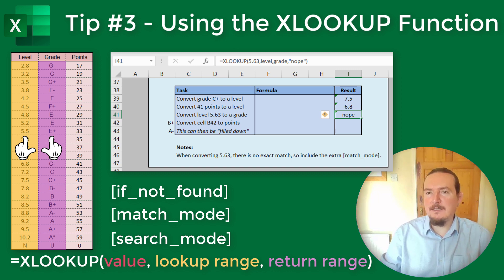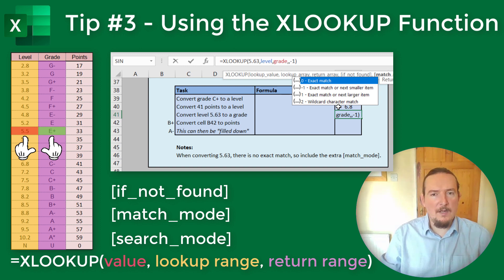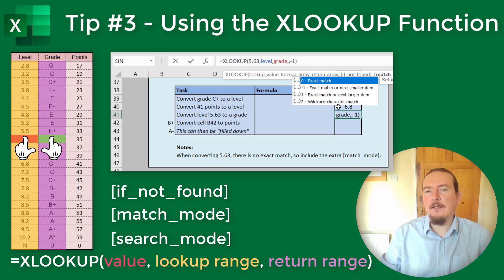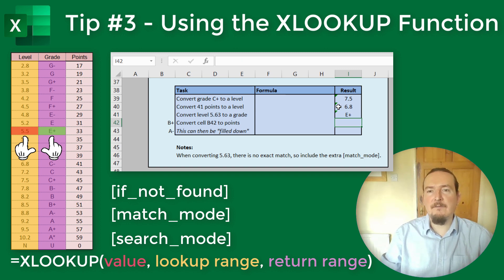The next input is match mode, and this behaves in the same way as the true/false input does in the VLOOKUP function. It defaults to 0, so if you miss it out, XLOOKUP will just assume you want to do an exact search. If you make it negative 1, it is going to return the exact match or the next smaller value, and a 1 is going to return the exact match or the next larger value. So in this case, if we ended up with a level of 5.63, I would interpret this as not quite being the next standard up, so minus 1 is the correct choice. So let's type equals XLOOKUP open brackets 5.63 comma levels comma grade comma comma minus 1 — two commas because I am not using a custom error message this time, but I do want it to return the closest lower value.